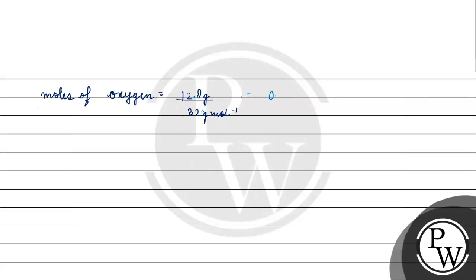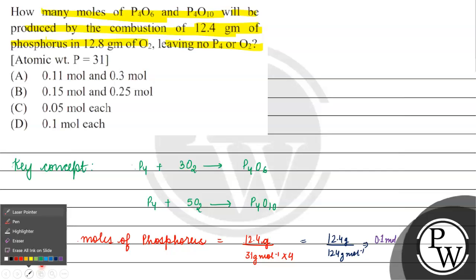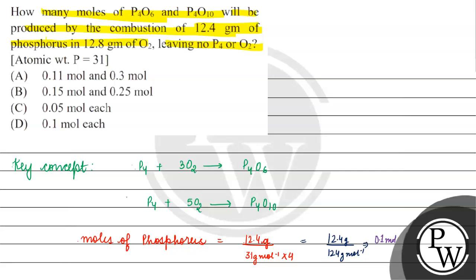This gives us 0.4 moles of oxygen and 0.1 moles of P4. Now, let's define variables: moles of P4 used for formation of P4O6 = x, so moles of P4 used for formation of P4O10 will be 0.1 minus x moles.